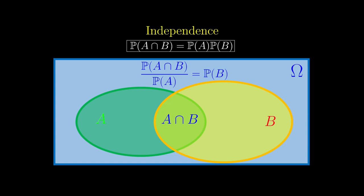More generally, if we have N independent events, we will have the probabilities of them happening together to be just the product of the individual probabilities.